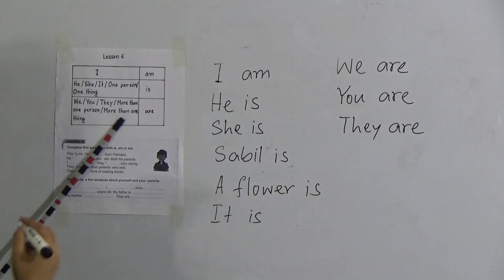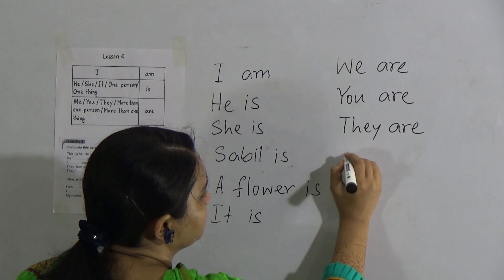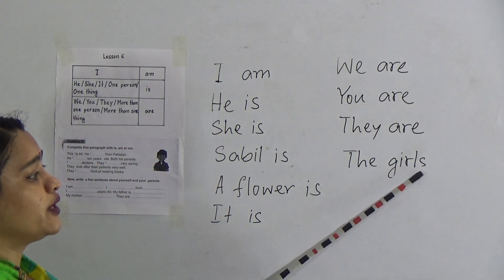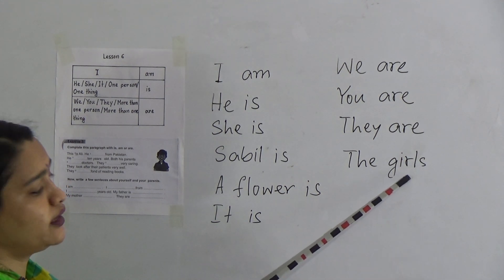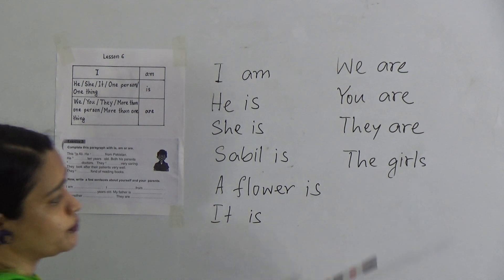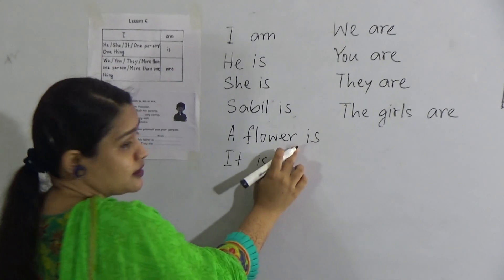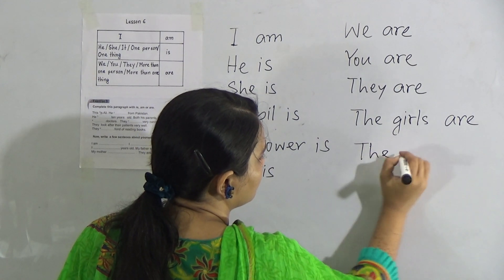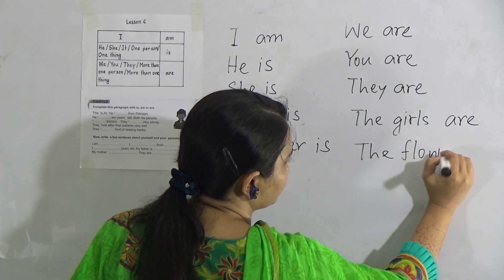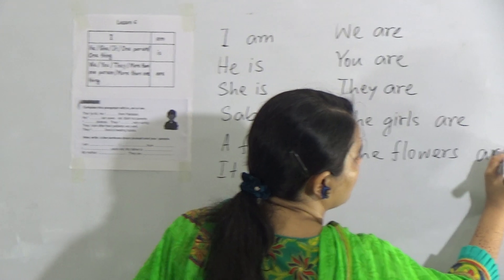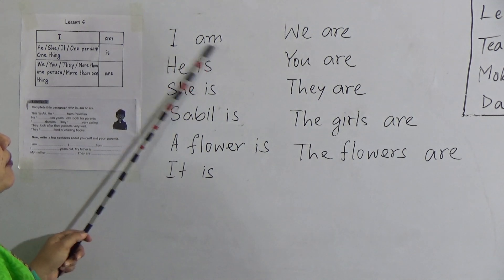After 'they': they are. If you talk about more than one person — like 'the girls' — we add 's', which means there is more than one girl, so this is a plural subject and we write: the girls are. Now if you think about more than one thing — like 'flowers' or 'two flowers' or 'three flowers' — this is the plural form, meaning there is more than one flower, so we write: flowers are.